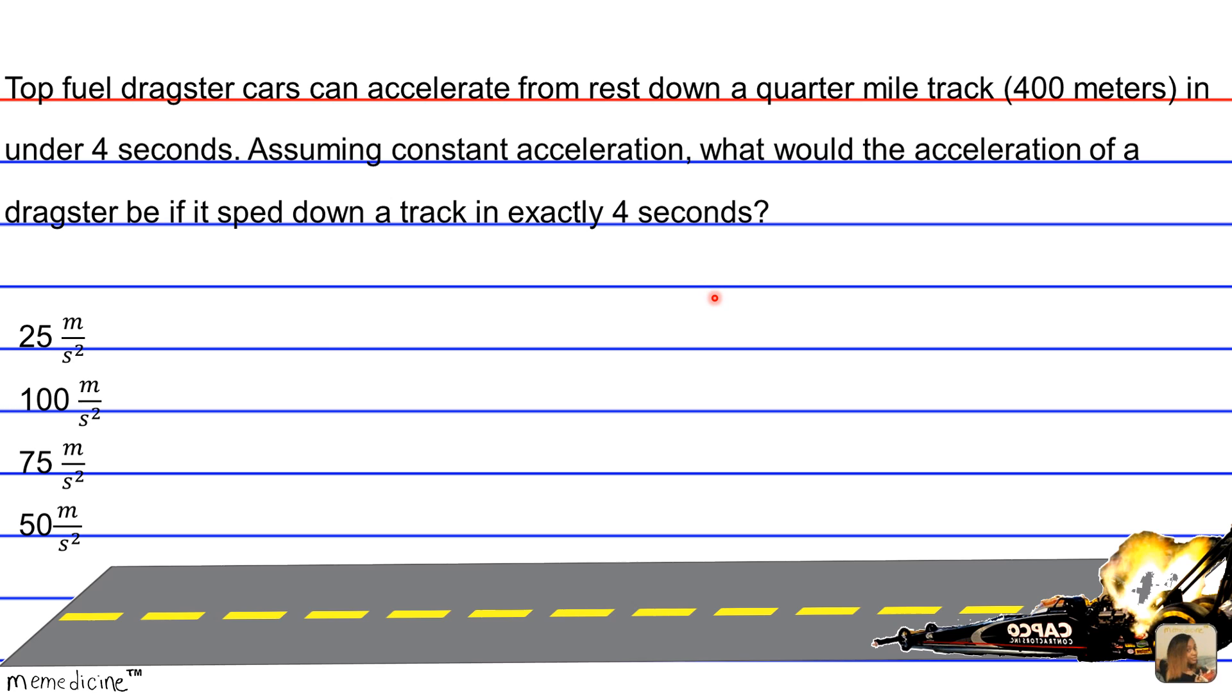Therefore, we can use this kinematics formula. D is equivalent to one-half AT squared, where D stands for the displacement, A of course stands for acceleration, and T is representative of the time of travel.